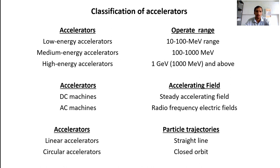Classification of accelerators: Accelerators are classified based on their operating range as low-energy, medium-energy, and high-energy accelerators. In general, they are categorized by their accelerating field—whether using steady accelerating fields or radio frequency electric fields—as DC machines and AC machines. Based on particle trajectory, whether the particle travels in a straight line or in a closed orbit, they are categorized into linear accelerators and circular accelerators.